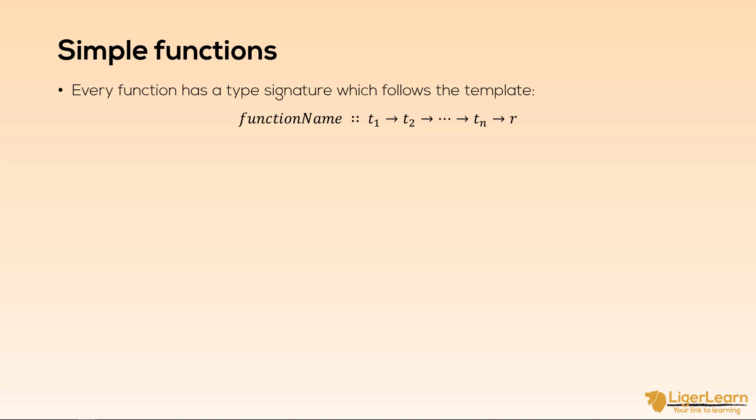First comes the function name, then comes the double colon, then comes the type of the first parameter to the function, then a dash and a greater than sign which is supposed to represent an arrow, then the type of the next parameter, and that repeats until you have specified the types of each of the parameters to the function. You then end with another arrow and type with this final type representing the return type of the function.